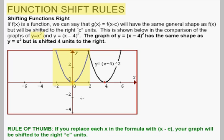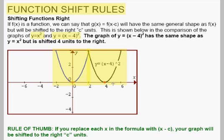Now let's look at the equation y equals (x minus 4) squared. It's the same formula as y equals x squared except x is replaced with x minus 4. The result is to shift that parabola from (0, 0) four units to the right. We get this identical shape shifted 4 to the right. You can see where the vertex is — it's at (4, 0). It's been moved from (0, 0) to (4, 0).